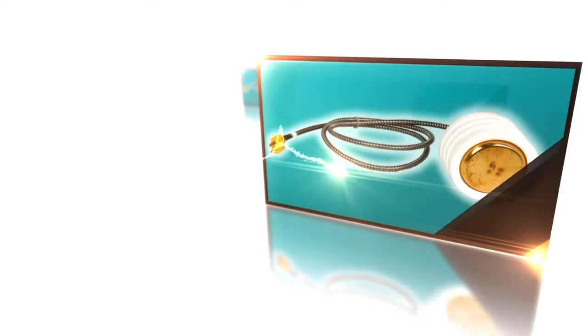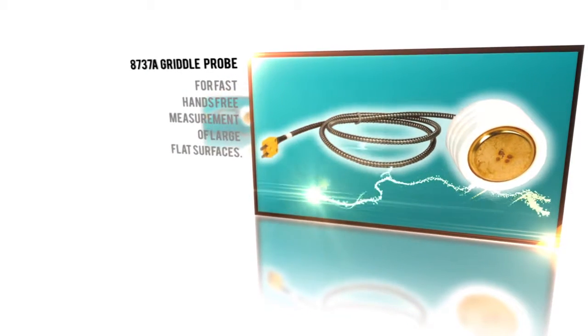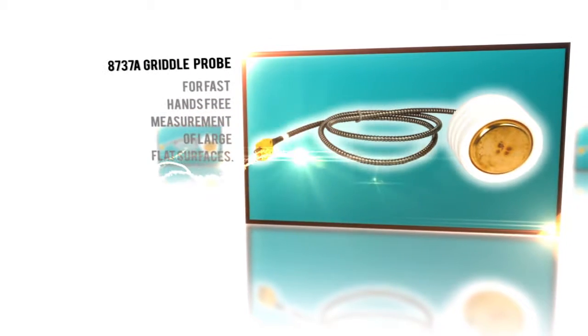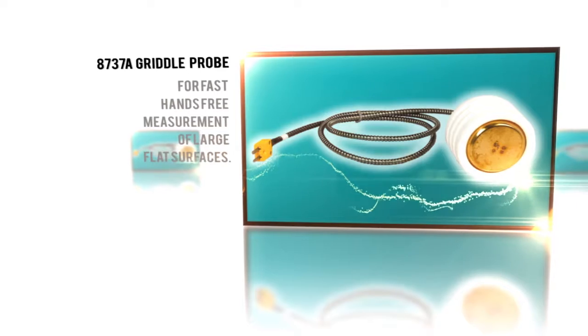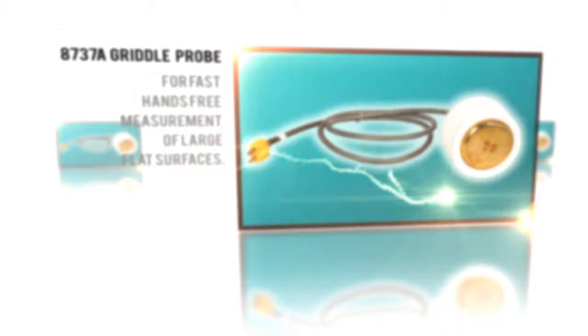Specialized probes are available as well, such as the TEGAM 8737A griddle probe. Packed in a high temperature housing with a metalized cable and large measurement surface area, this probe is perfect for short or long-term monitoring of cooking griddles and grills and other flat surfaces.